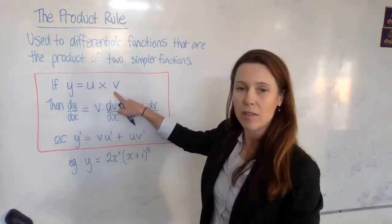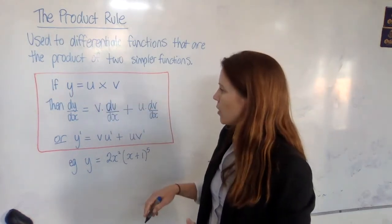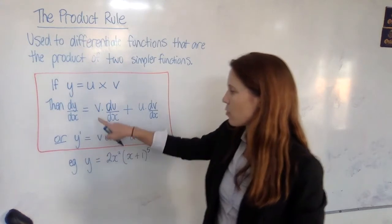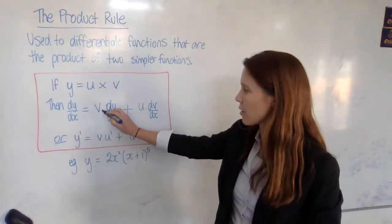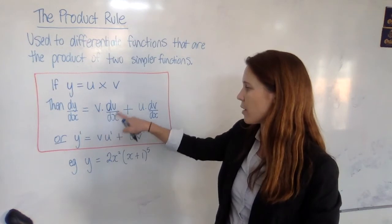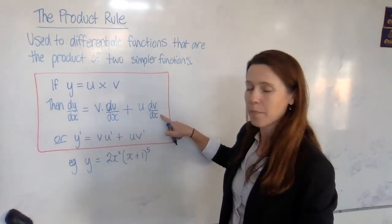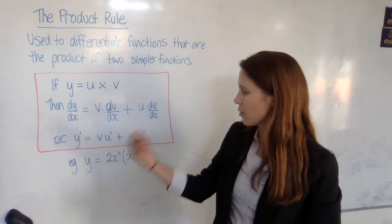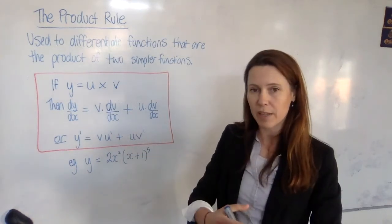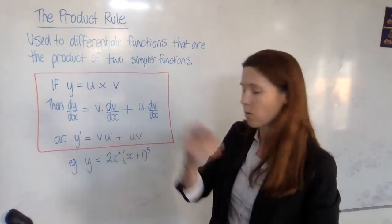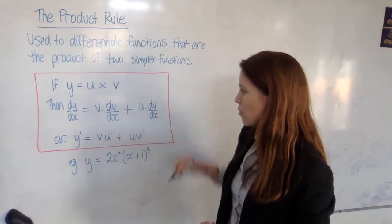We define the parts u and v. Then we say dy/dx equals v times, the times there is signified by a dot, v times du/dx plus u times dv/dx. So clearly we're going to need to define what u is, what v is, what du/dx is, what dv/dx is, and then sub them into this formula.